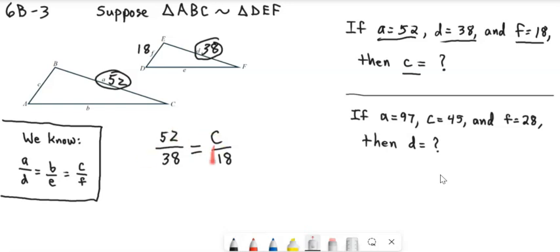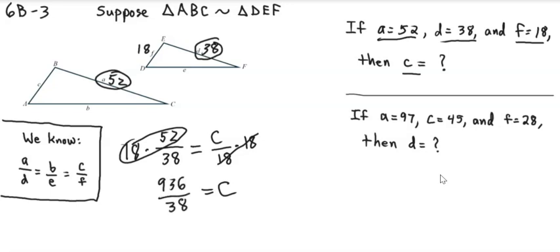When we have one fraction equal to another, multiply by 18 on both sides. Over here, we're going to cancel the denominator, so all we have left is C. And over here, we're going to do 18 times 52, which is 936. So 936 over 38, but I want to turn this into a decimal. So I'm going to divide 936 by 38, and my answer is 24.632. So C is equal to 24.632, and we can put that right over here. Side C is 24.632.